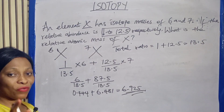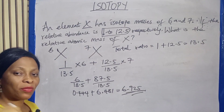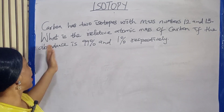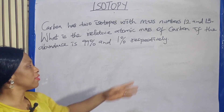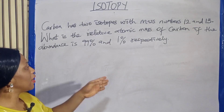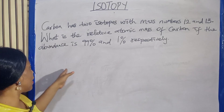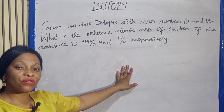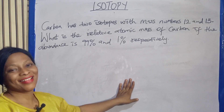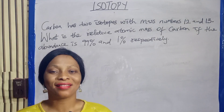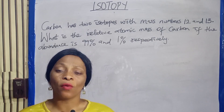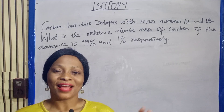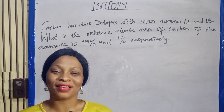Now I'm going to give you one to solve — drop your answer in the comment section. Carbon has two isotopes with mass numbers 12 and 13. What is the relative atomic mass of carbon if the abundance is 99% and 1% respectively? I would like you to drop your answer in the comment section. Thank you for watching till the end. Please subscribe to our channel and invite your friends to do the same. Thank you, and success in your exam!